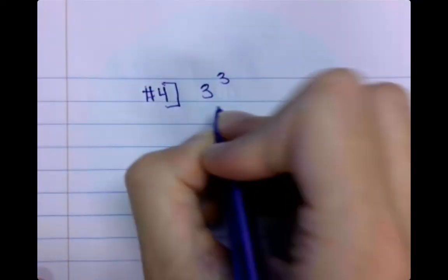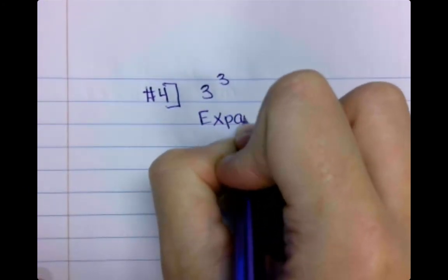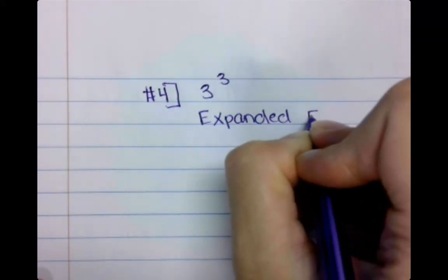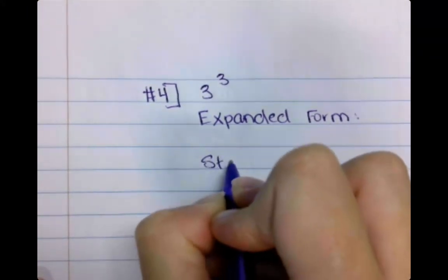All right, so let's continue on with your examples. I'm going to have you do a couple yourself. Number four, this one I want you to do yourself, is three cubed. You're going to write this in expanded form and standard form.